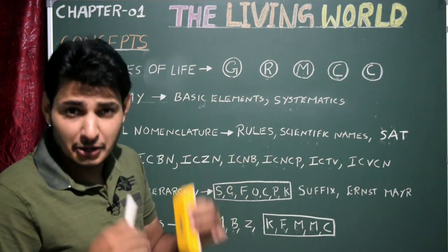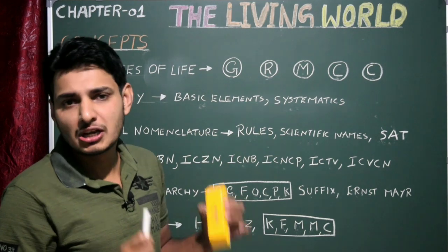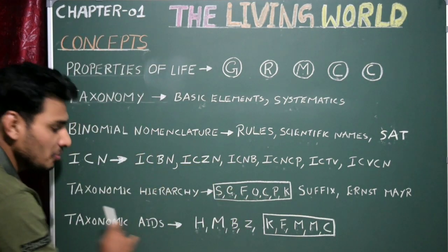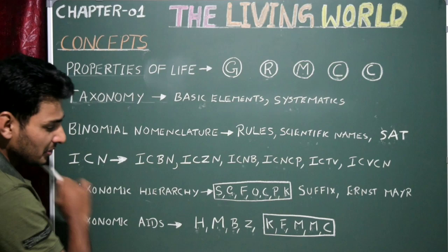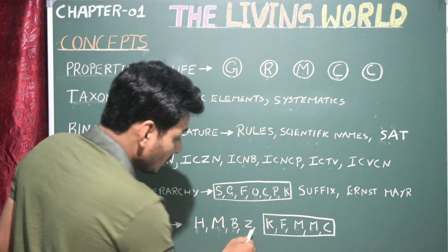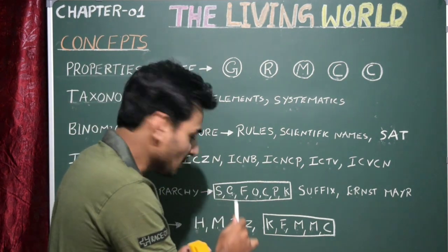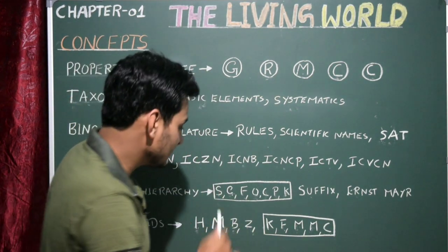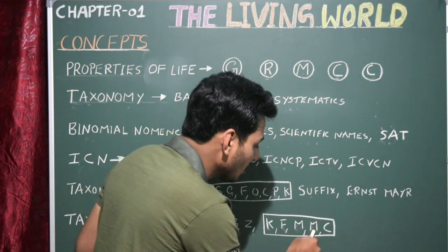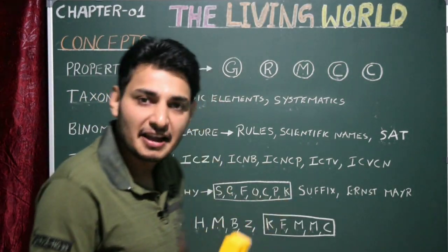Then Ernst Mayr's famous biological concept of species. Next, taxonomic aids — herbarium, museum, botanical garden, zoological park — and the five important books which come under taxonomic aids: key, flora, manuals, monograph, and catalog. So let us discuss about the properties of life.